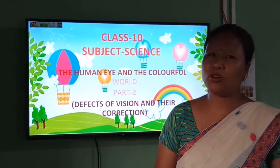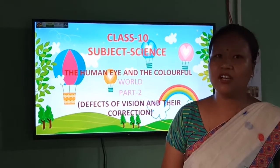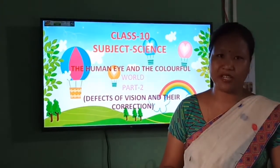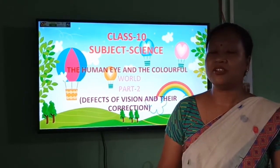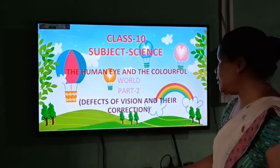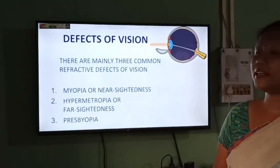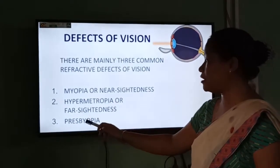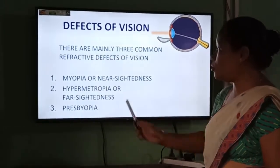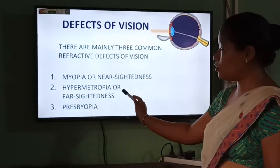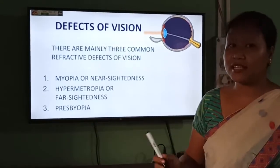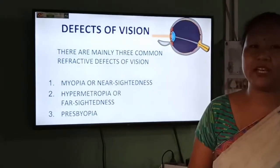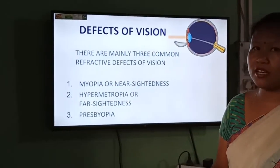We can also correct that defect by using various measures. The main defects of vision that the human eye experiences are: first, myopia; second, hypermetropia; and third, presbyopia. Myopia is also called nearsightedness, and hypermetropia is also called farsightedness. Let us discuss one by one — what these defects are, how and why they occur, and what corrective measures we can use.